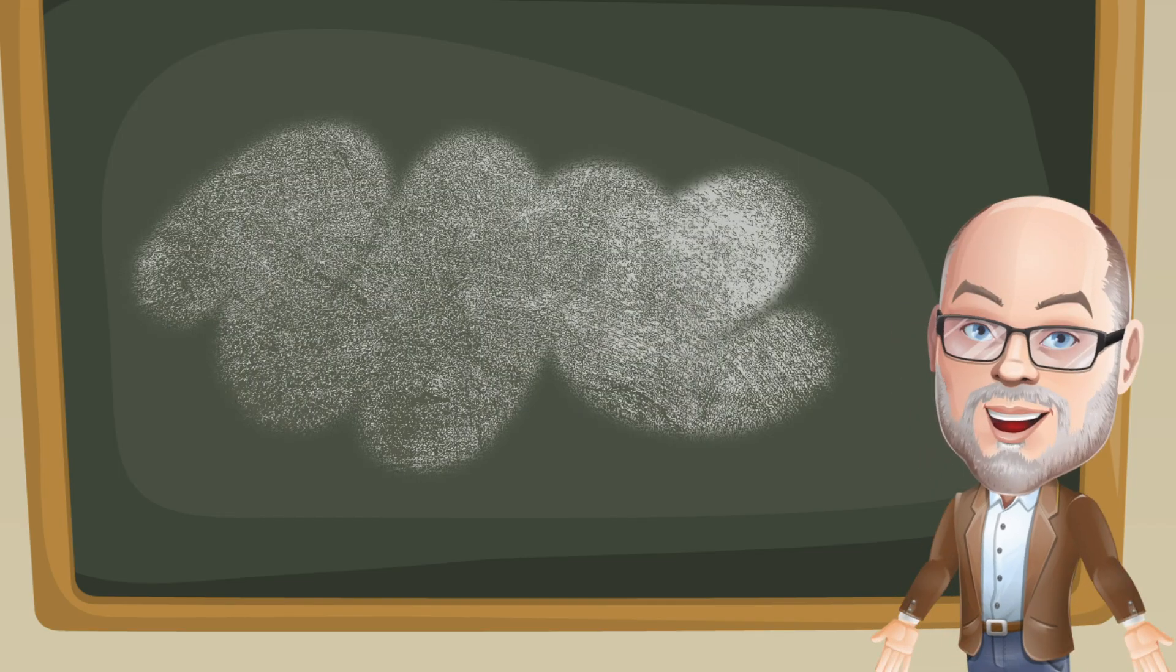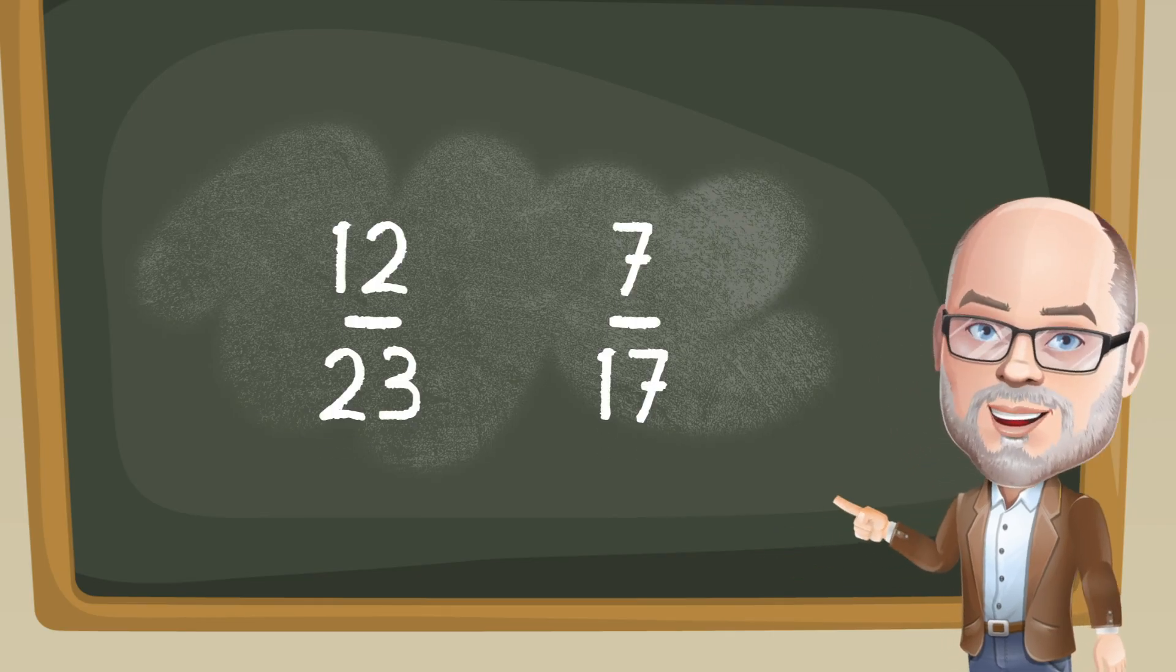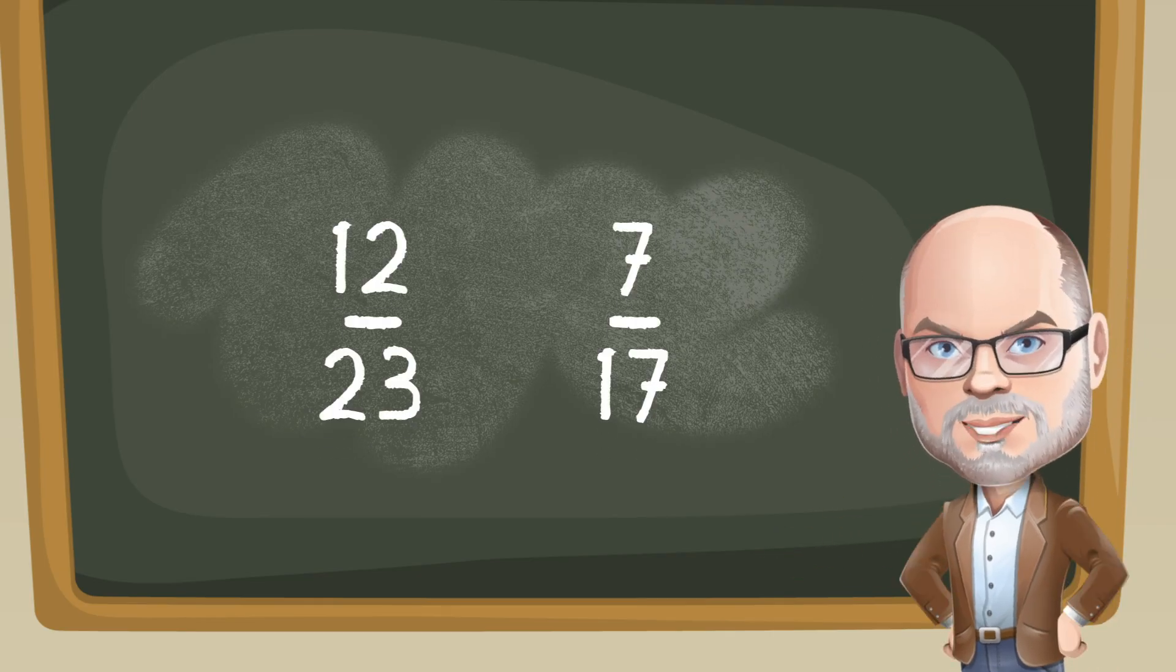You might be thinking, that's great, but I can find a common denominator for these fractions easily. But what if the fractions were 12 23rds and 7 17ths? The common denominator for these two fractions isn't easy to find.